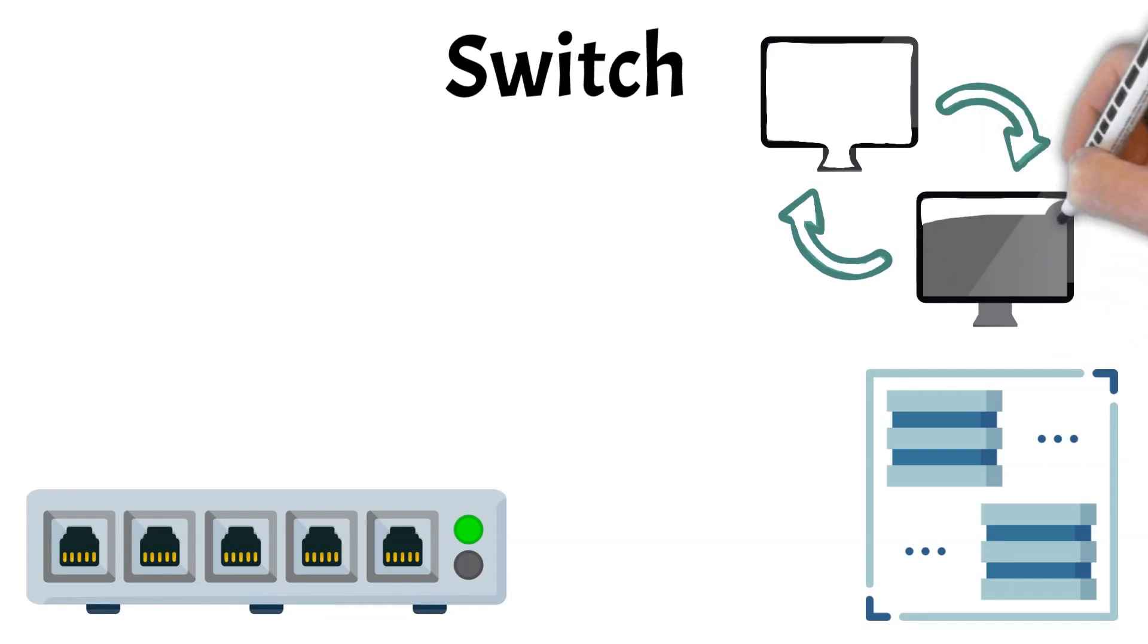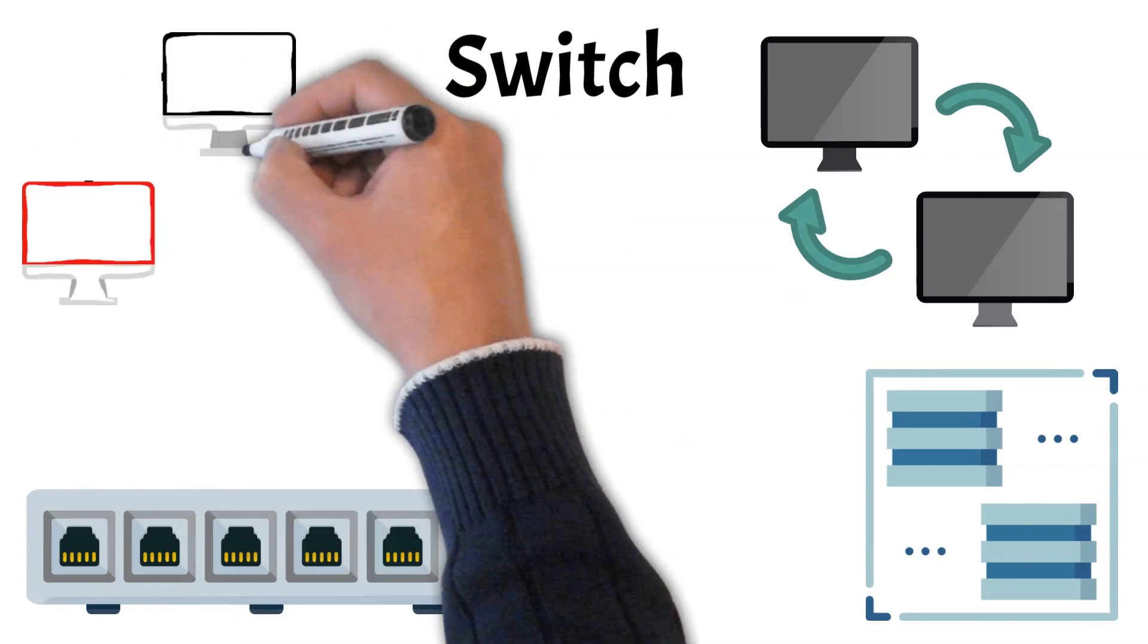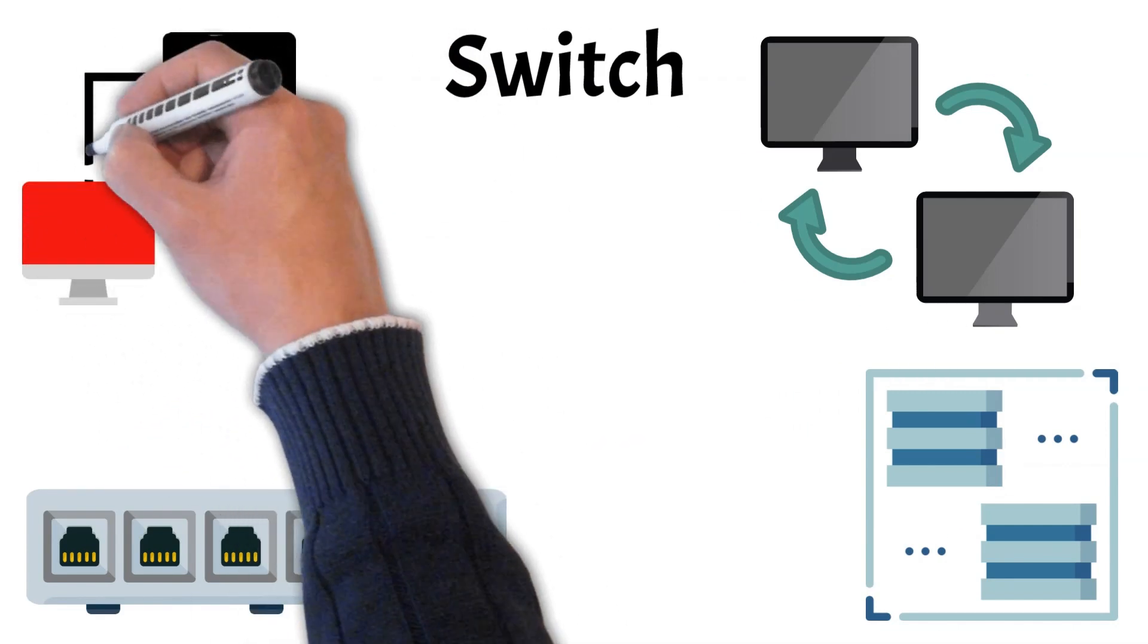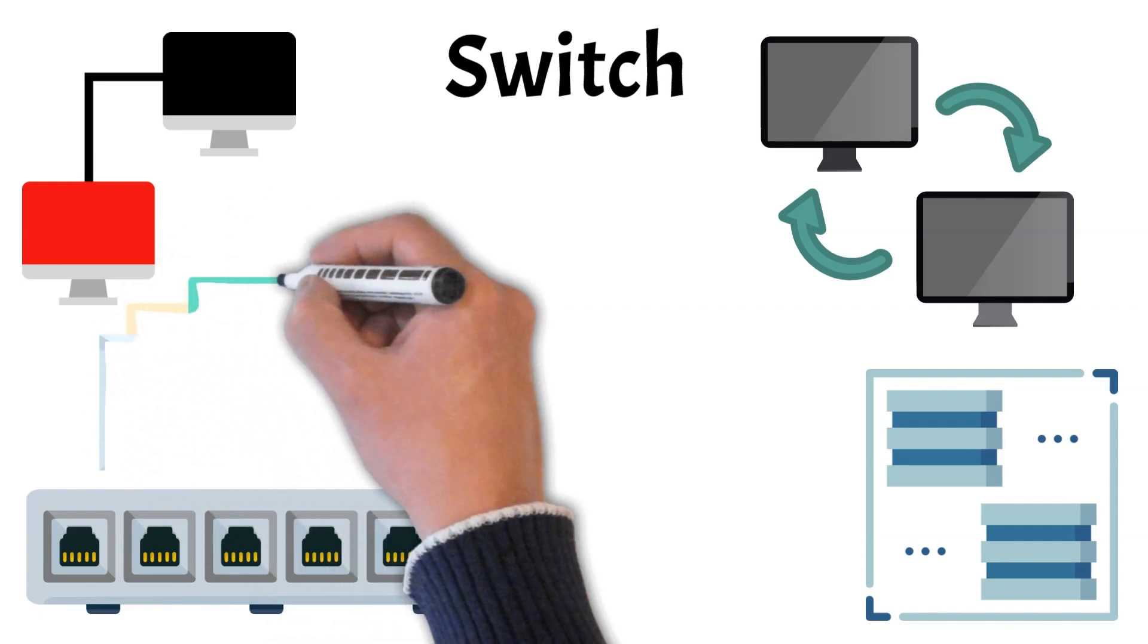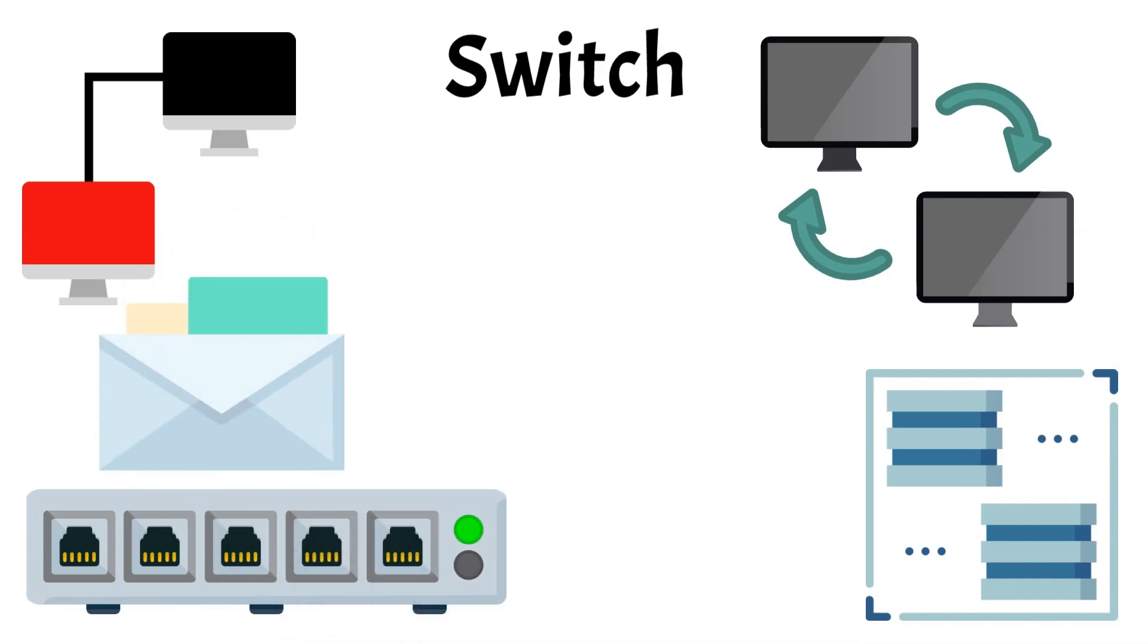Unlike routers, which connect different networks and direct traffic based on IP addresses, switches function primarily within a single network, using MAC addresses to determine where to send the data. This means that when a switch receives a data packet, it examines the packet's destination MAC address and forwards it only to the designated device, minimizing network congestion.